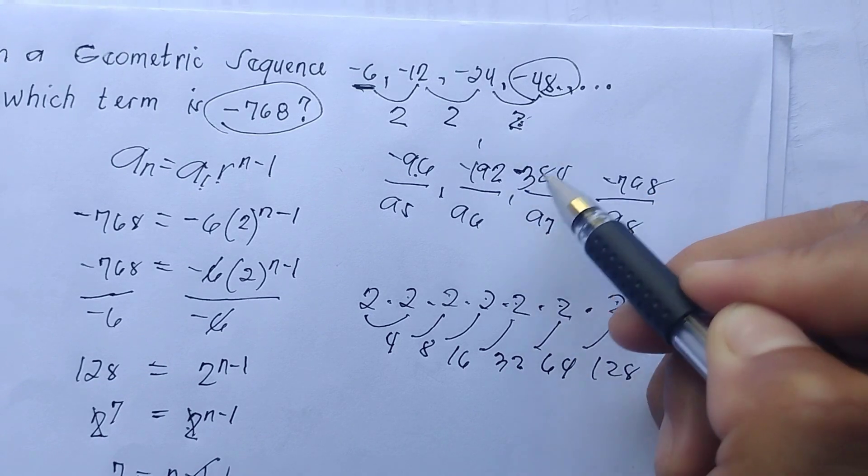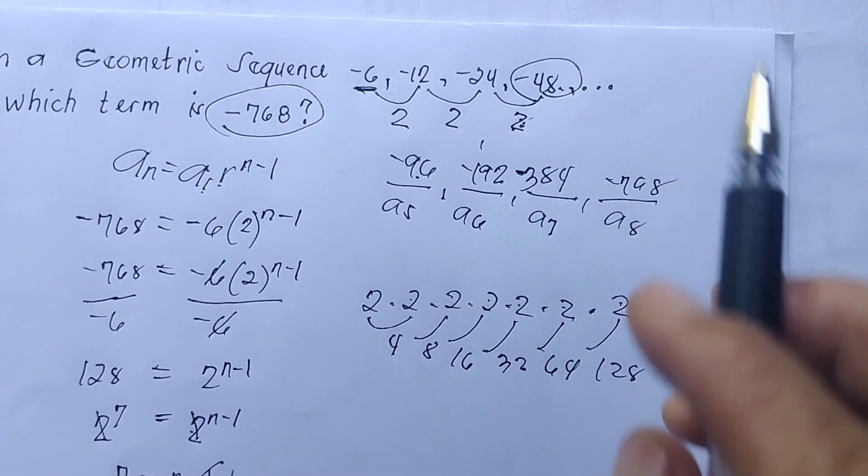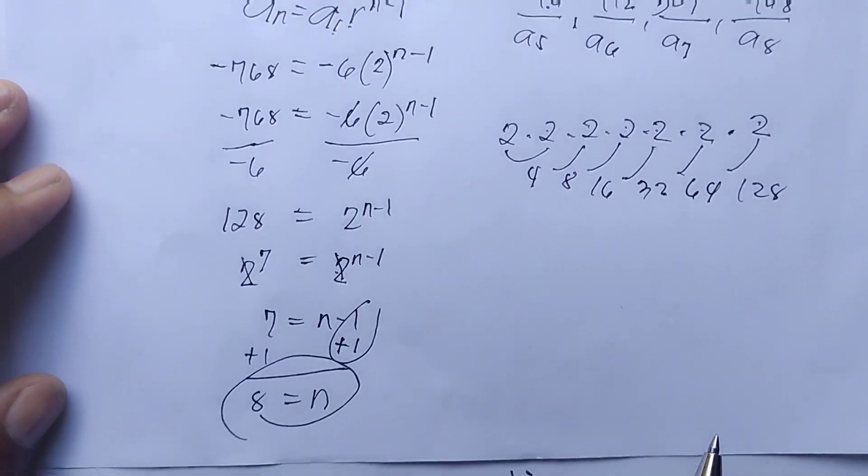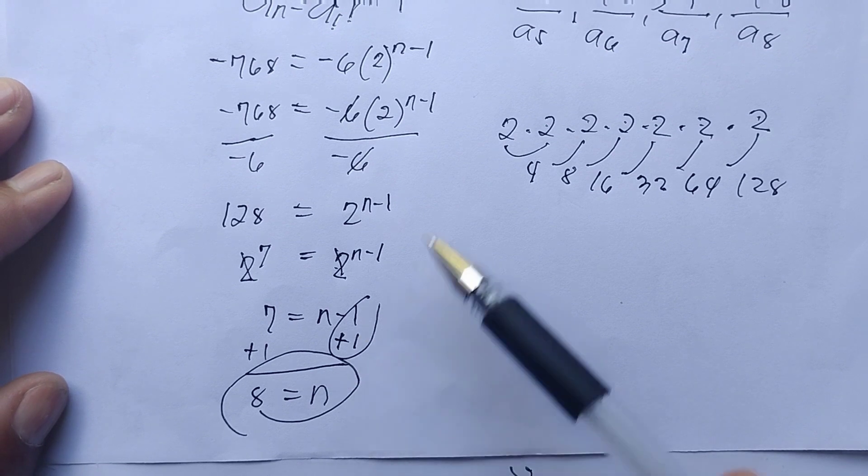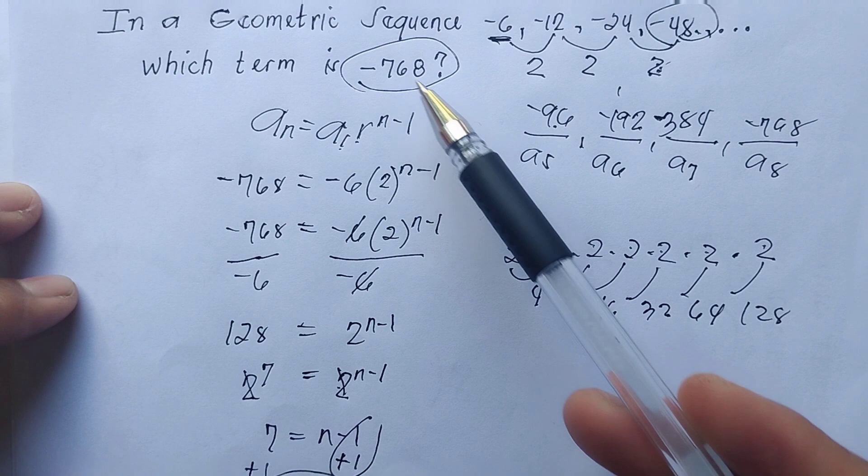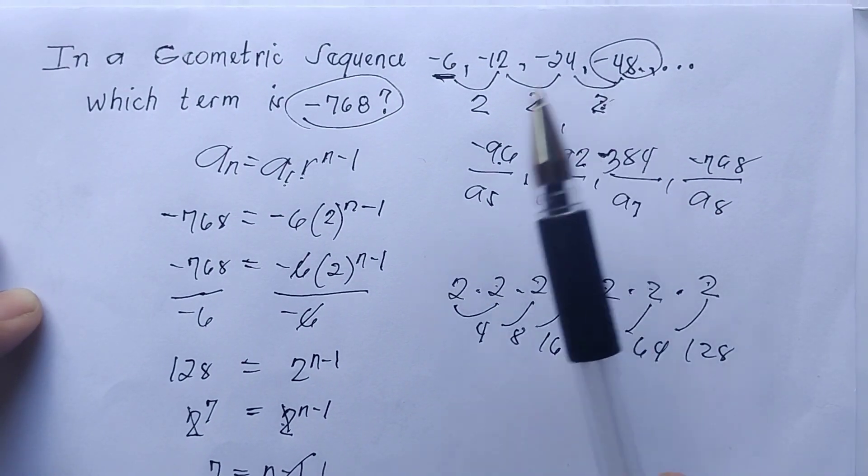Then 2 times -384 gives you -768. So it only shows that our answer is correct.